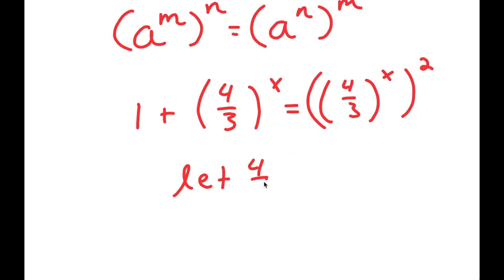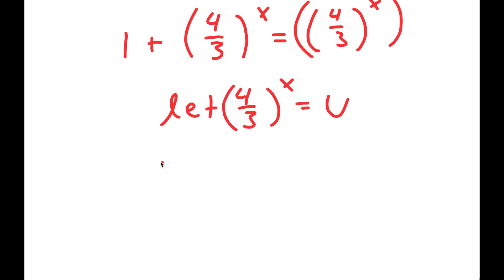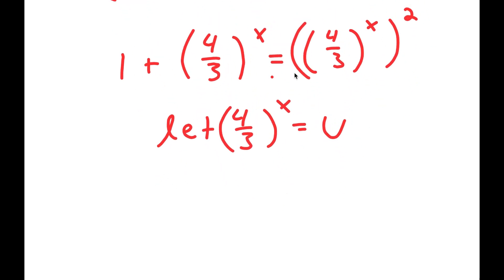Now I'm going to let 4 over 3 to the power of x equal to the variable u. So if I substitute in u for 4 over 3 to the power of x, I get 1 plus u is equal to u squared.